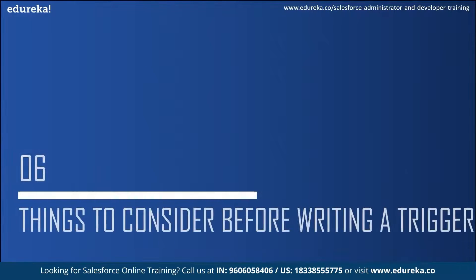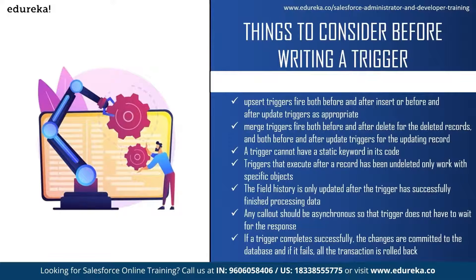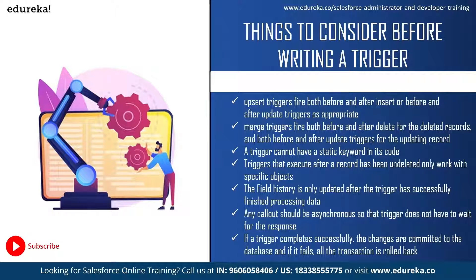Here are things to consider before implementing a Salesforce trigger. Upsert triggers can fire both before and after insert or before and after update as appropriate. Merge triggers can fire both before and after delete for deleted records, and before and after update for updating records. A trigger cannot have a static keyword in its code. Triggers that execute after a record is undeleted only work for specific objects. Field history is only updated after the trigger has successfully finished processing. Any callout should be asynchronous so triggers don't have to wait for a response. If a trigger completes successfully, changes are committed to the database; if it fails, all transactions are rolled back.